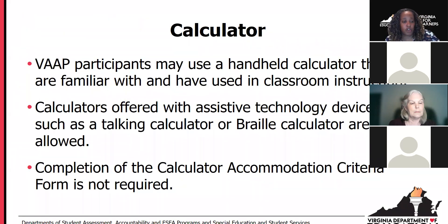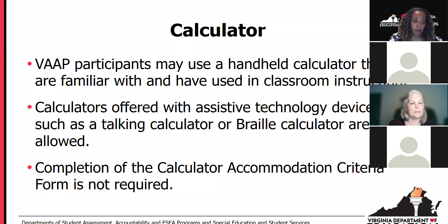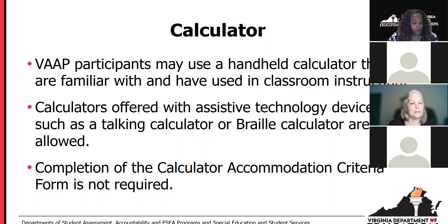The calculator has been a popular question: can students in this population have access to a calculator? The answer is absolutely yes. They can use a handheld calculator they are most familiar with — hopefully something used in the classroom during regular classroom instruction. For students who use assistive technology, talking calculators or Braille calculators are allowable. You do not have to complete the calculator accommodation criteria form for students to have access to the calculator during their VAP test. The calculator is allowed and it's expected they are using the one they're most familiar with from instruction.